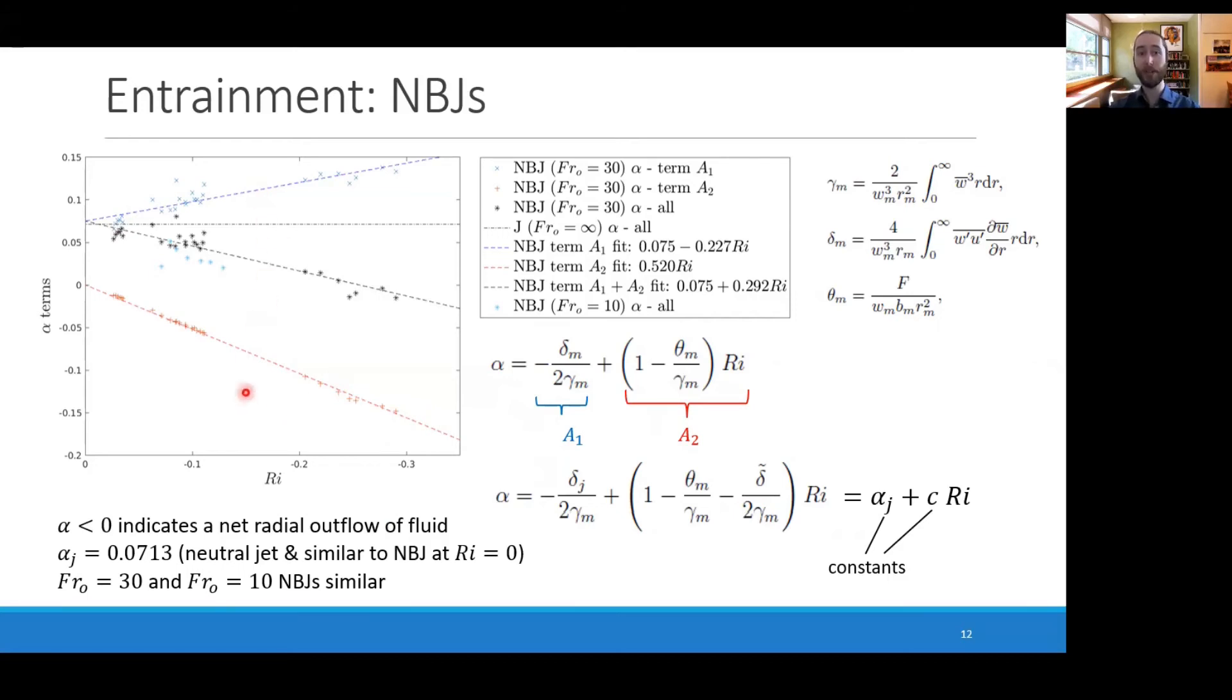By summing these two together, we get the black markers over here, which reflect the overall entrainment coefficient in a negatively buoyant jet. We see that it starts positive and then decreases with increasing Richardson number, eventually becoming negative at around Richardson number is minus 0.2. This reflects a net radial outflow from the negatively buoyant jet to the environment. I've also shown in these light blue stars here the entrainment coefficient for a Froude number 10 negatively buoyant jet, and we can see it's pretty similar to the Froude number 30 case.